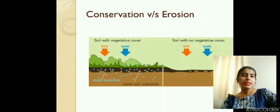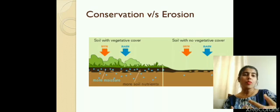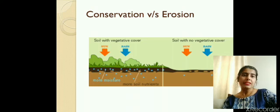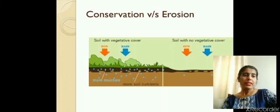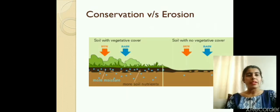This slide shows conservation versus erosion. More vegetation present in the soil means more moisture will be absorbed by the soil and more soil nutrients will be retained. In comparison, soil with no vegetative cover, when rain comes or winds blow, leads to soil erosion. This is how plants contribute to soil conservation and also maintain the level of underground water.